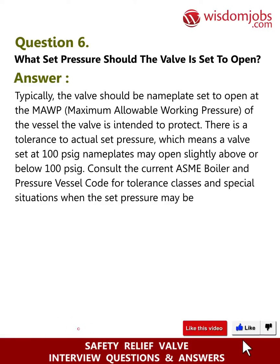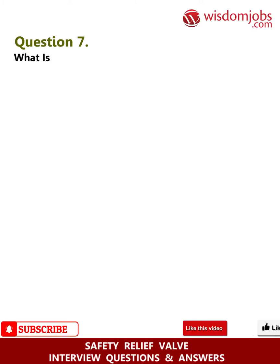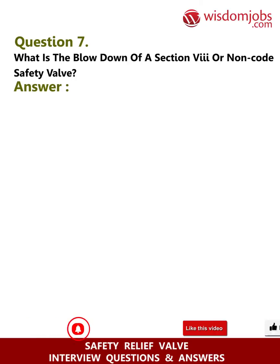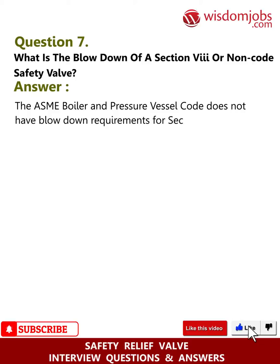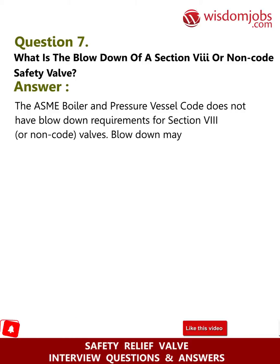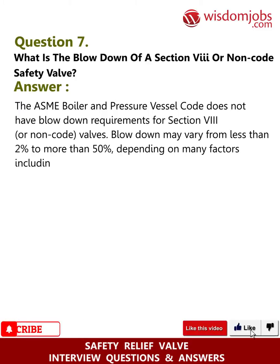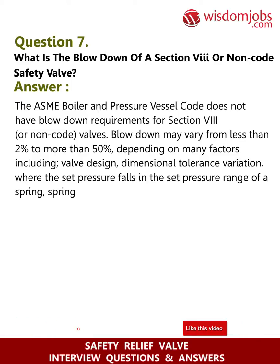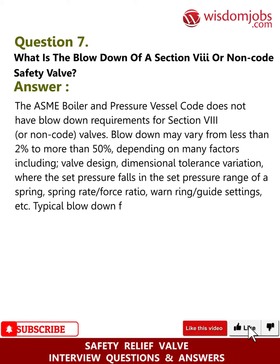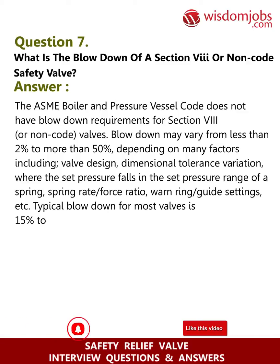Question 7: What is the blowdown of a Section 8 non-code safety valve? Answer: The ASME Boiler and Pressure Vessel Code does not have blowdown requirements for Section 8 or non-code valves. Blowdown may vary from less than 2 percent to more than 50 percent depending on many factors including valve design, dimensional tolerance variation, where the set pressure falls in the set pressure range of a spring, spring rate/force ratio, and wander/guide settings. Typical blowdown for most valves is 15 to 30 percent but cannot be guaranteed.